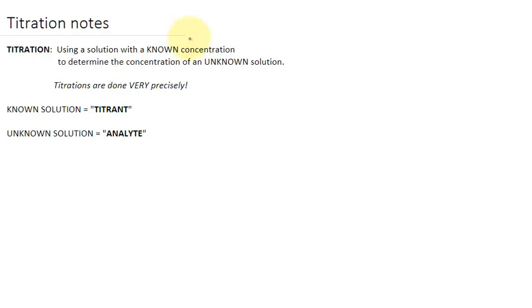Titration, as you can see here, and I would ask you to put these definitions and quick comments down into your notes so that you've got them. But titration is basically using a solution with a known concentration, something that we know about and are very certain of, to determine the concentration of an unknown solution that we're trying to find out more about.